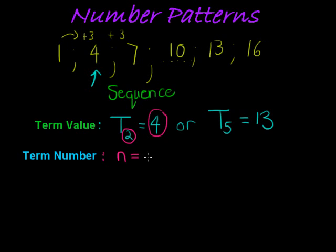So N4 would be the fourth term: 1, 2, 3, 4th term. This is the fourth term — it's a term number.